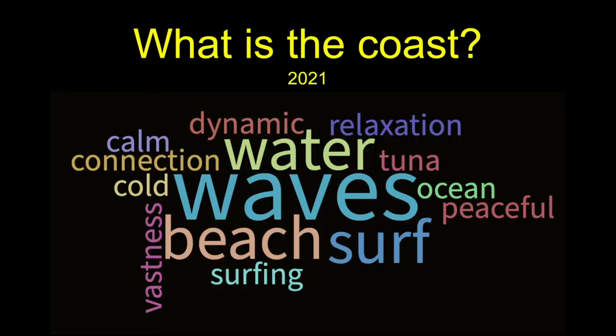Here are the results from fall 2021. I used a different word cloud generator so the smallest words are a little bit bigger, but relatively speaking you get the same outcome — waves, beach, and surf, and then things like tuna, peaceful, and calm are much less common. Our views of the coast are dominated by the skin of the ocean and by beaches.